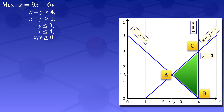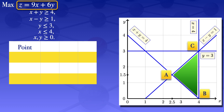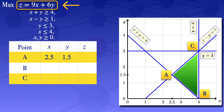I'll draw a table with points A, B, and C, listing the x value, y value, and value of objective function Z. At point A, x = 2.5 and y = 1.5. Substituting into the objective function: Z = 9(2.5) + 6(1.5) = 21.5.